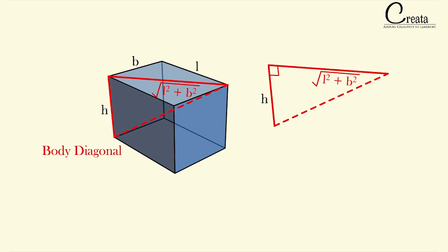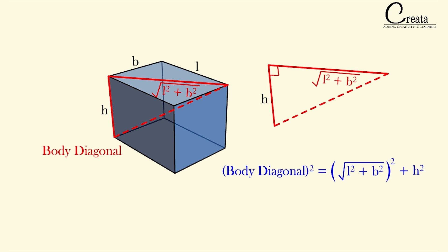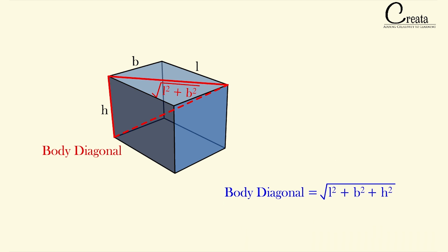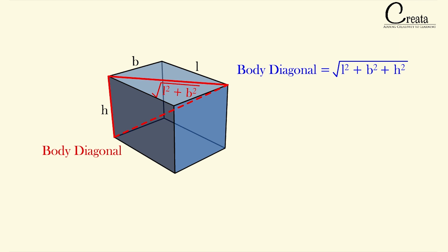Applying the Pythagorean theorem to this right angle triangle, we get: body diagonal² = (√(L² + B²))² + H². Solving this, the body diagonal equals √(L² + B² + H²). This is the formula for the body diagonal — the square root of the sum of squares of all three dimensions of the cuboid. In competitive exams, this is the answer to the maximum length of a rod that a cuboid can accommodate.